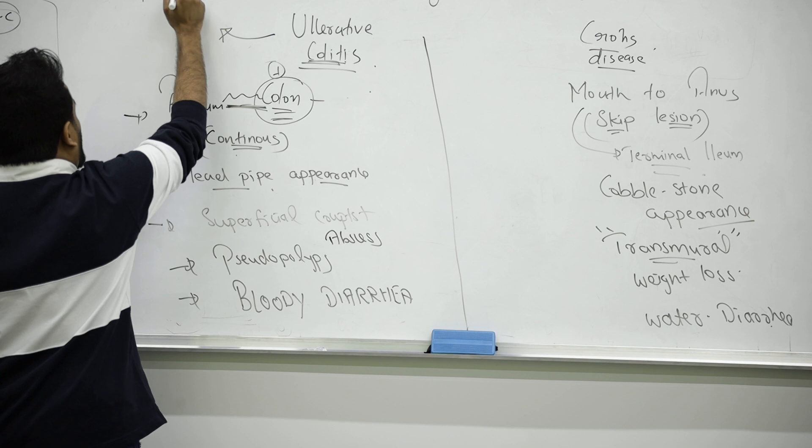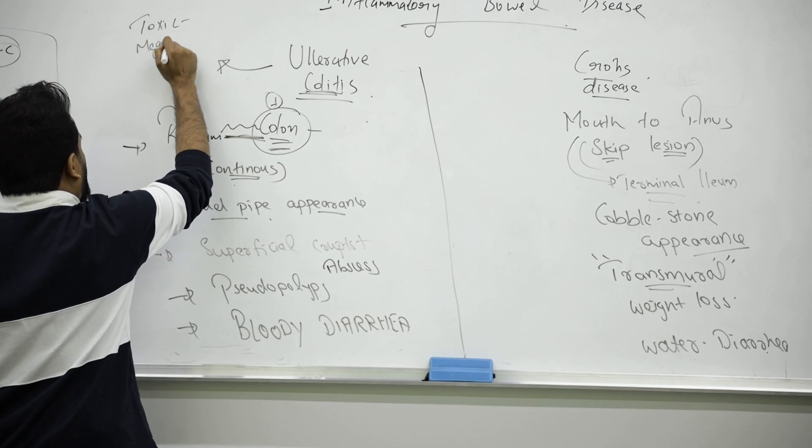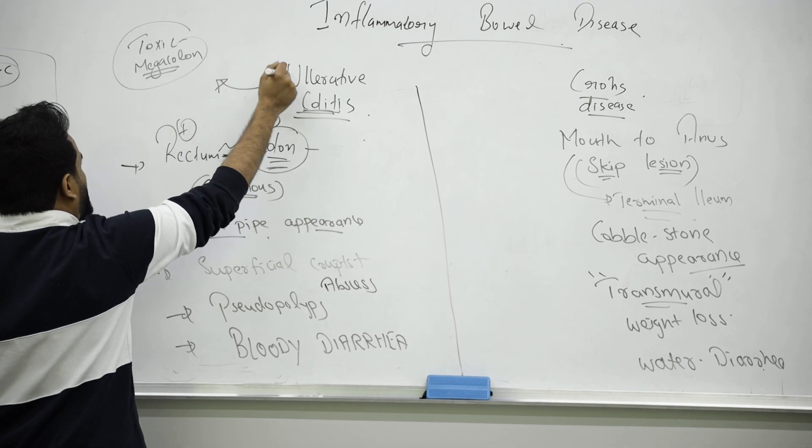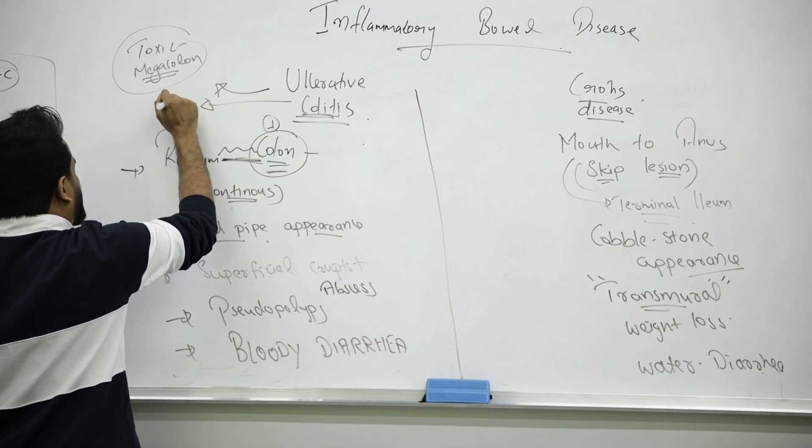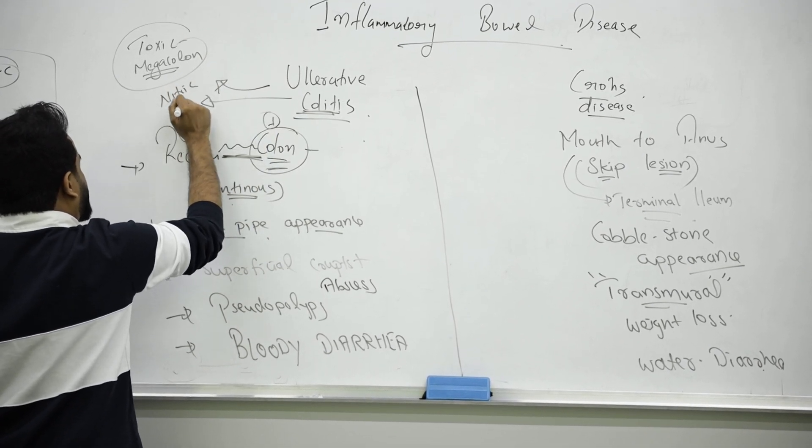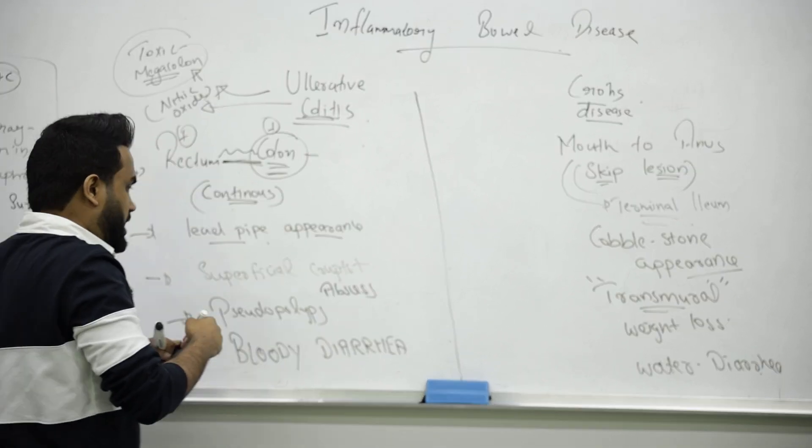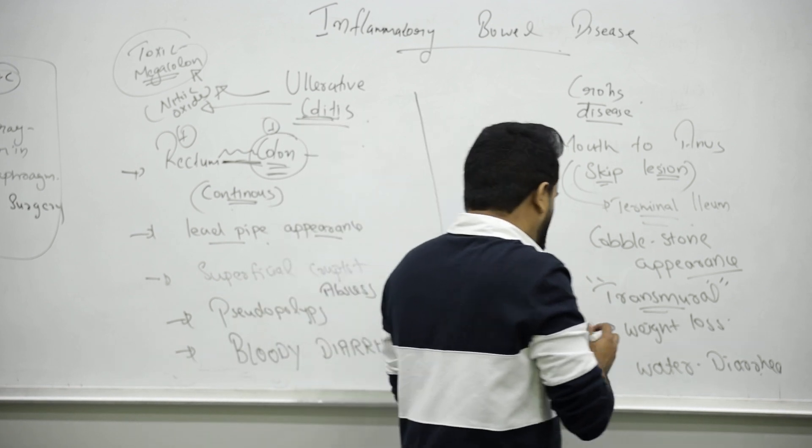Toxic megacolon occurs because in the colon there will be releasing nitric oxide. Nitric oxide release will make the colon dilate - that is called toxic megacolon.